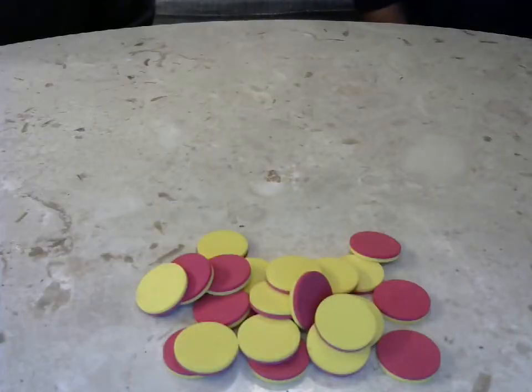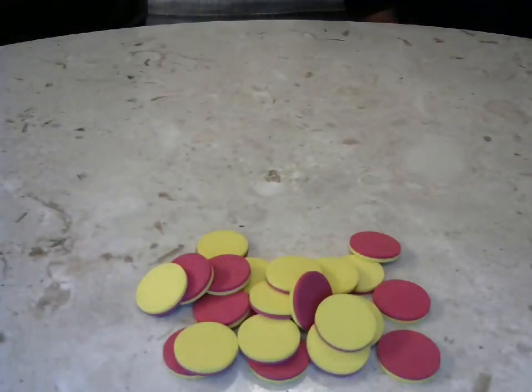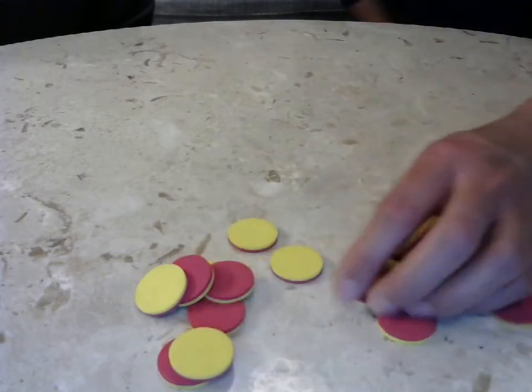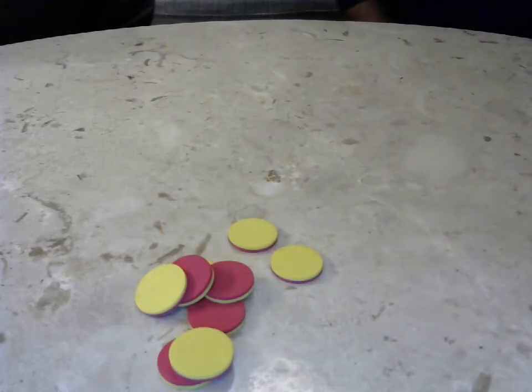All right, so here we are with our pile of counters. Now when you play 1-2-NIMH you get to decide how many counters or how many objects you start with in the pile. I think for our first game we are going to use eight counters.